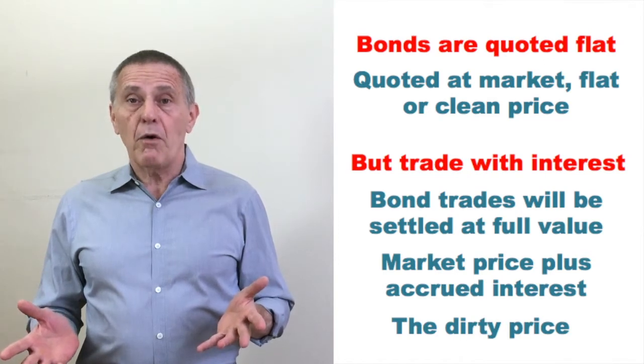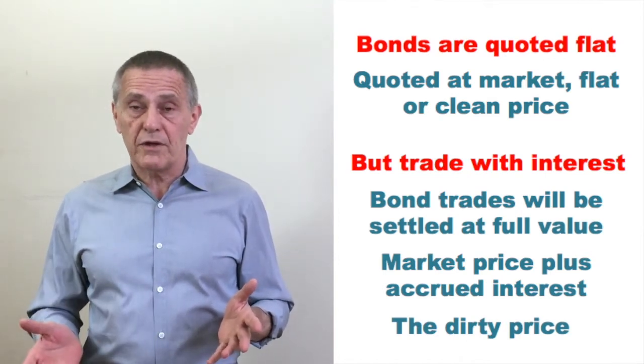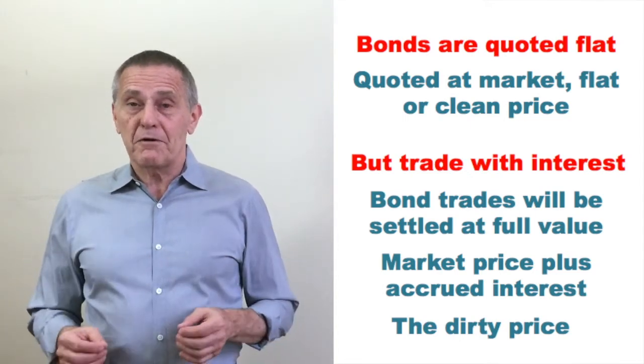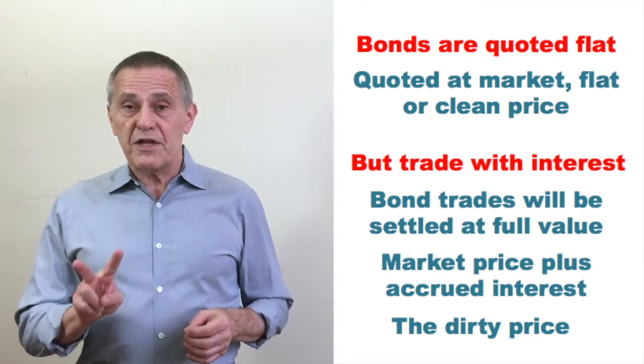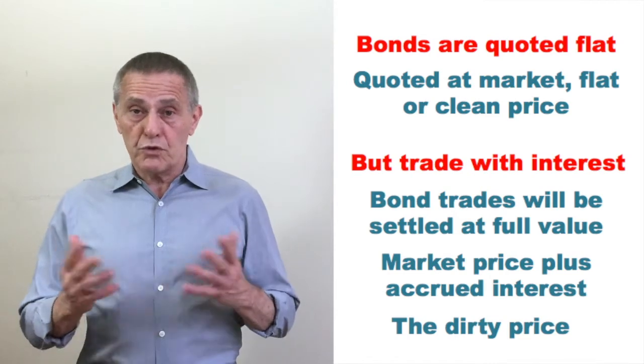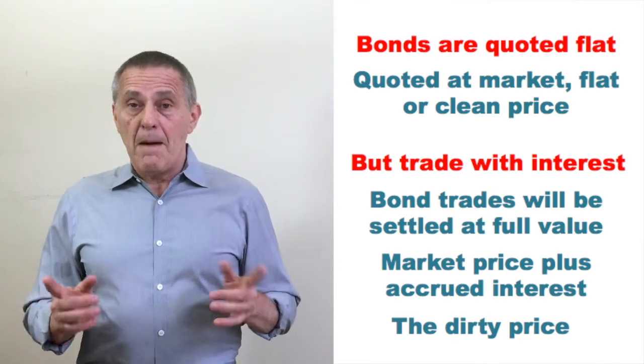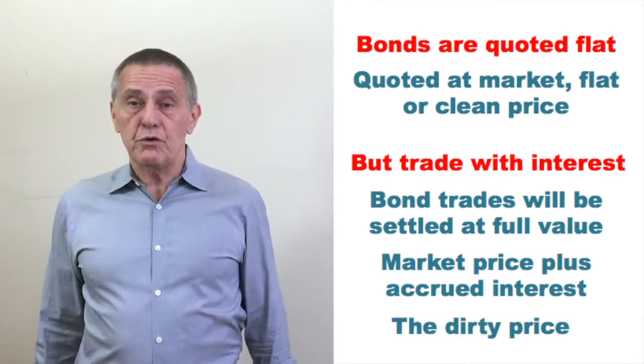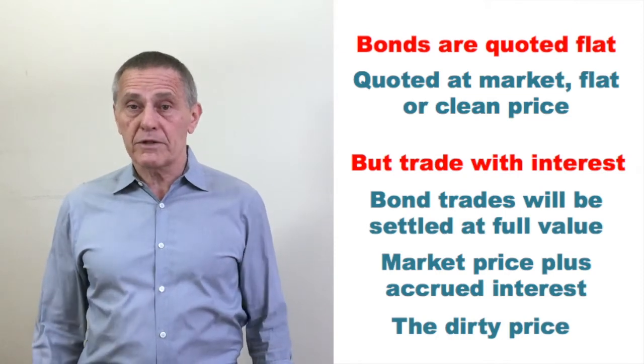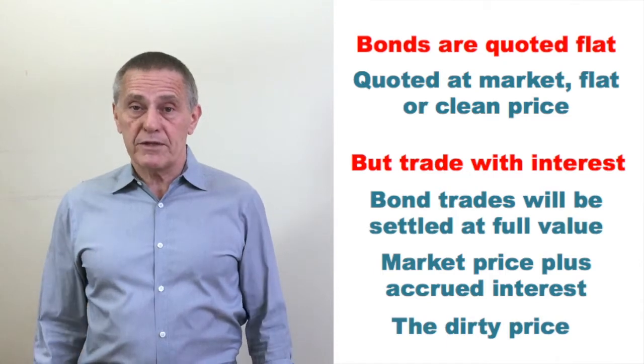So the statement I started the video off with, that a bond's price is the present value of the future cash flows, if by that we mean the dollar amount the buyer and seller are going to exchange, that statement would be only true twice a year for semi-annual pay coupon bonds, which are the norm in the majority of sectors of the U.S. fixed income markets. Because a trade settling on any date other than a coupon payment date means that in addition to the price agreed between the buyer and seller, that accrued interest is going to be added on to determine the settlement value of the transaction.